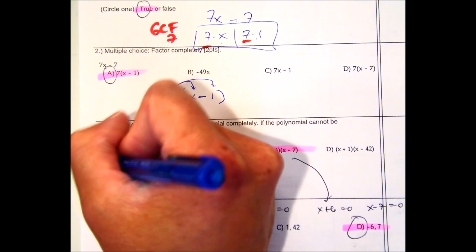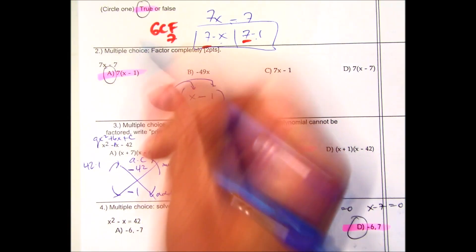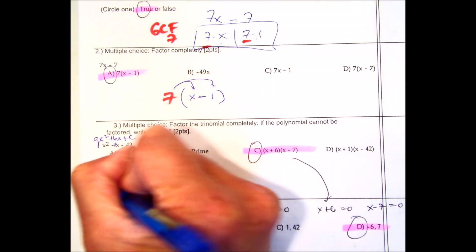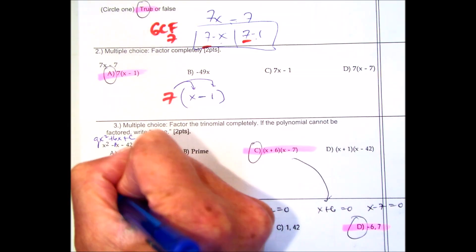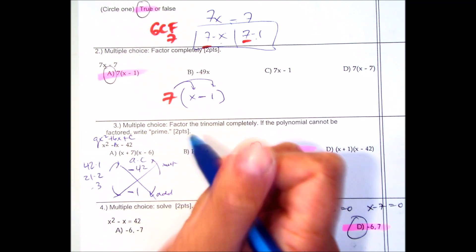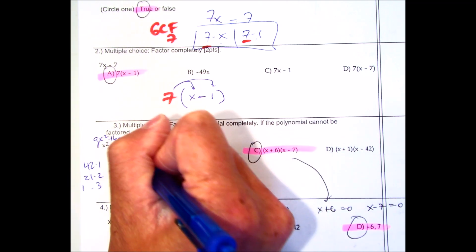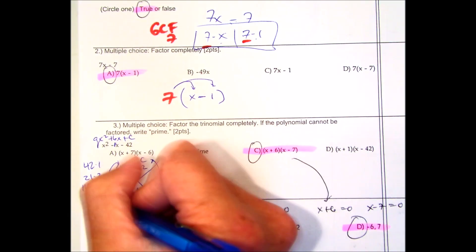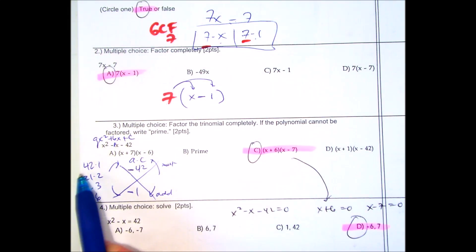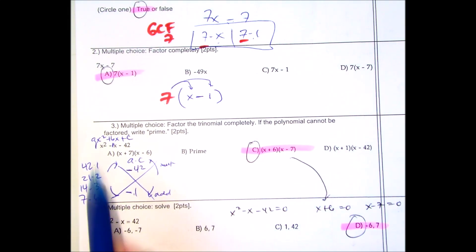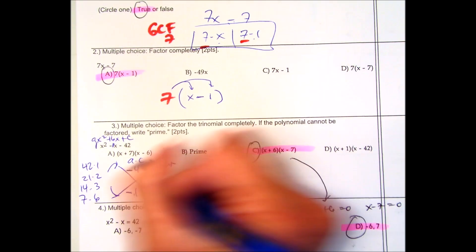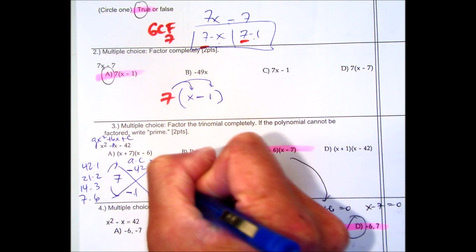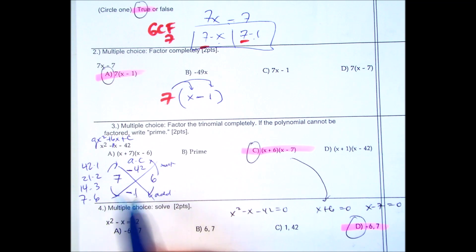If you get stuck here, list out some numbers. Write the bigger number on the left side: 42 times 1, 21 times 2, 3 times 14. You can think of 5 — doesn't go in there — 6 sometimes. Then you think of when you add or subtract those, can they equal 1? Right here is your answer: 7 and 6. Now one of those has to be negative, so the bigger number has to be negative. So negative 7 plus 6 equals negative 1.